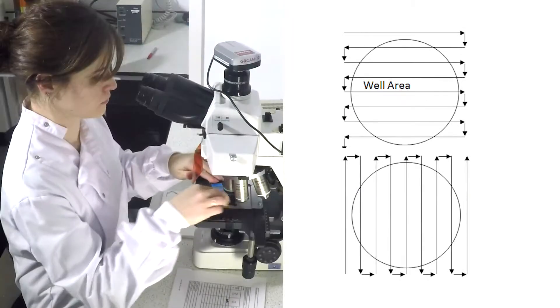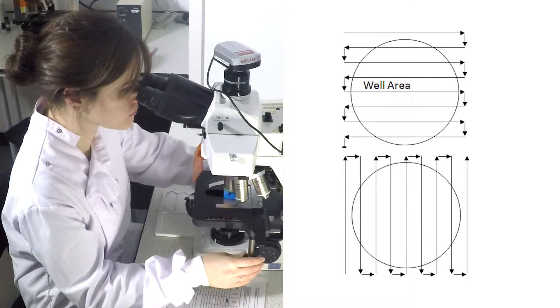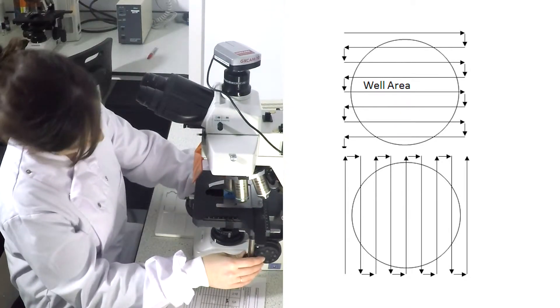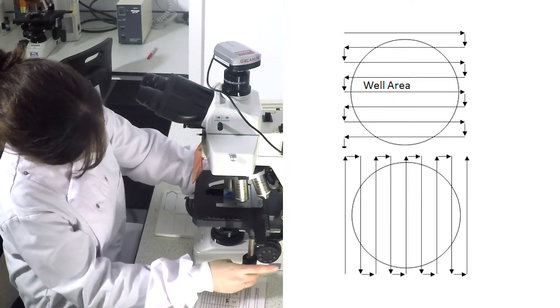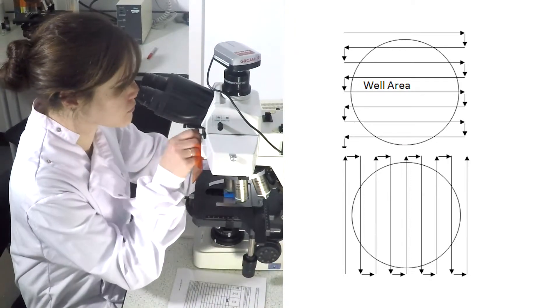Enumeration should be carried out by scanning the entire well area using either a horizontal or vertical pattern. The scanned area should also extend at least half a field of view outside of the well area.